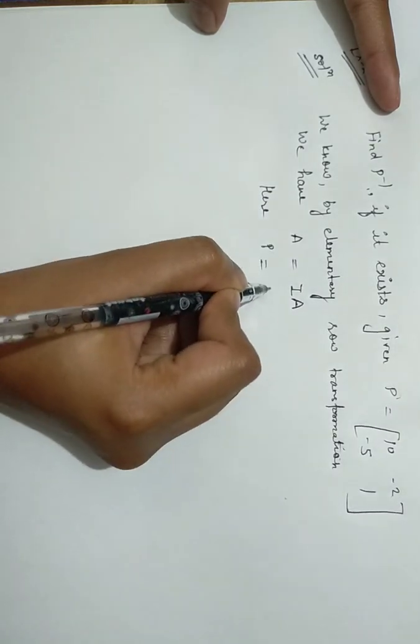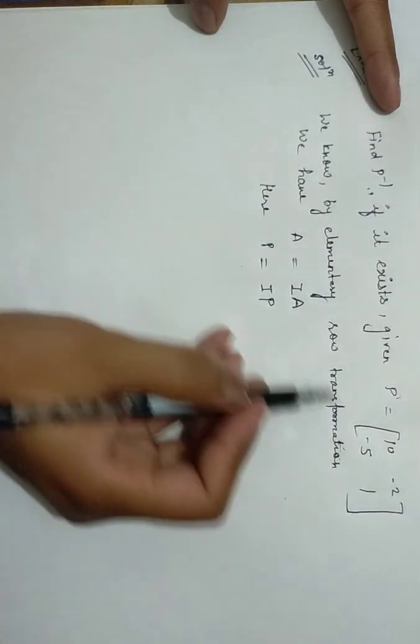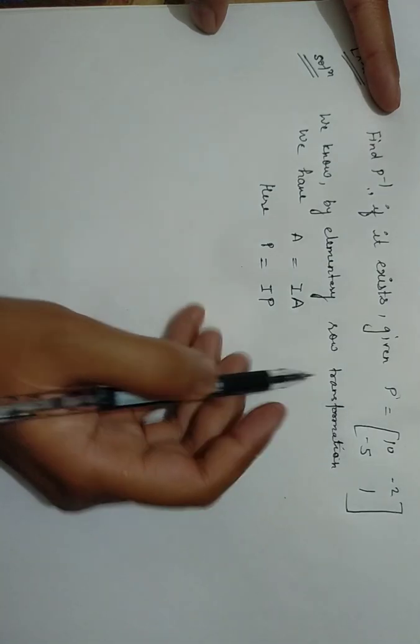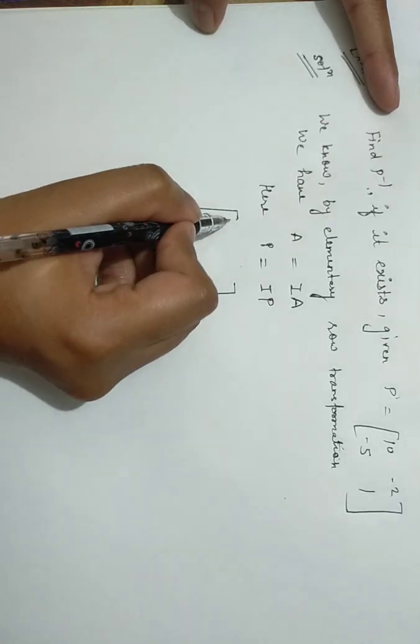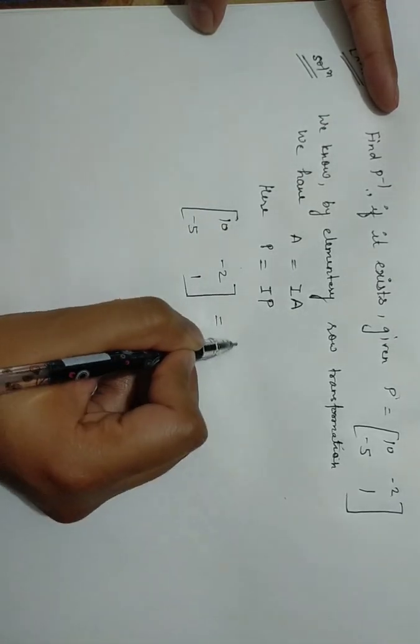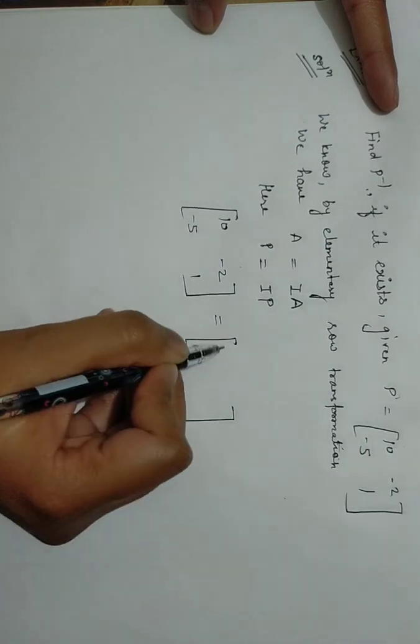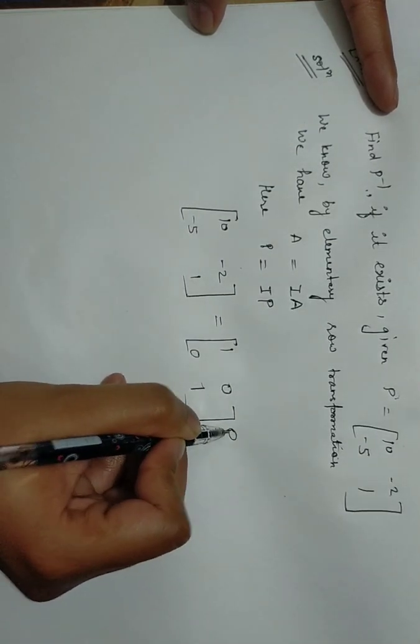Here, P equals I times P. So I will put their values. P equals the given matrix [10, -2; -5, 1] equals the identity matrix [1, 0; 0, 1] times P. Now, what was my aim? To make it identity. So first step was to make it one.